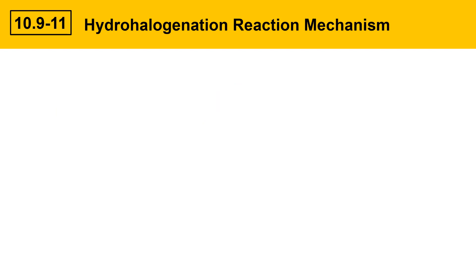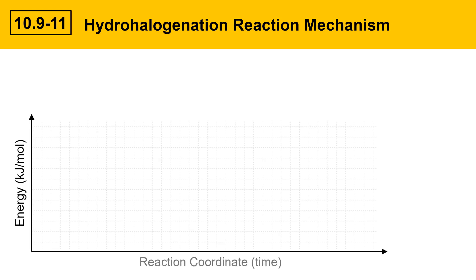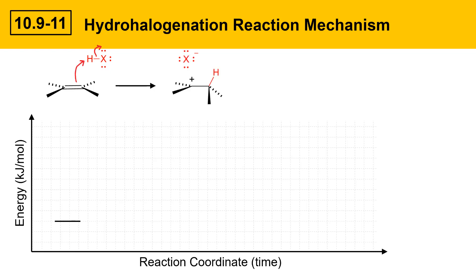This slide will cover the hydrohalogenation reaction mechanism and talk about some energy changes. Here we've got an energy level diagram where energy is shown on the y-axis with units of kilojoules per mole, and on the x-axis we have reaction coordinate, which is just the passing of time. I'll start with the reactants — the alkene and the HX reagent — and represent their energy by drawing a line on the diagram. As the first step happens, we get to the intermediate carbocation and X⁻. That line is much higher in energy because carbocations are pretty unstable.